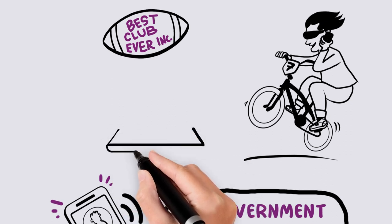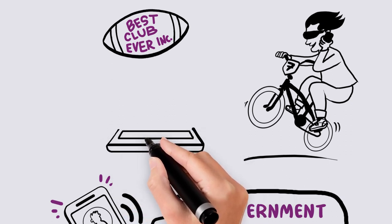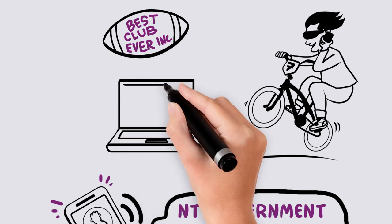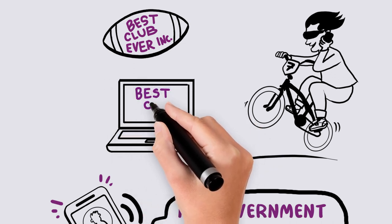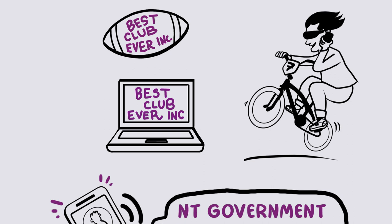If you decide to become incorporated, remember that certain information from your association is available to the public, including your association's name, financial statements, constitution, as well as the name and addresses of your public officer.